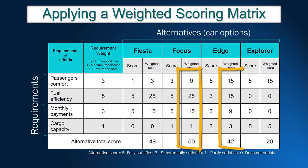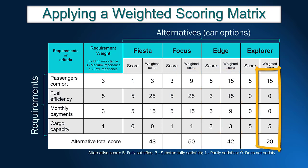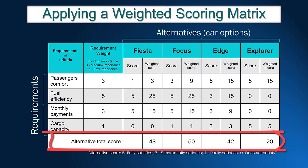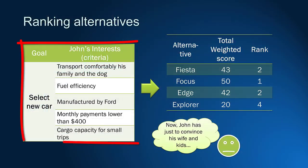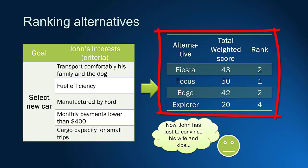Now we can repeat the calculation for the remaining alternatives. It is now possible to have an idea of how suitable the alternatives are for John's requirements. The weighted scoring method translates needs and opinions into weights and scores, which helps to compare alternatives using numerical values. To recap: needs and interests were translated into requirements, the requirements received weights based on importance level, then the total weighted score was calculated — making it possible to compare and rank alternatives. In this case, we may assume that the Ford Focus is the most suitable alternative for John's needs.